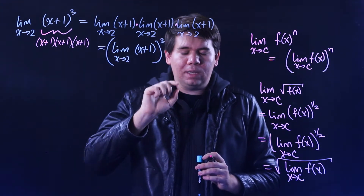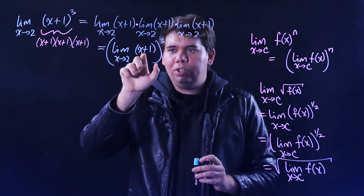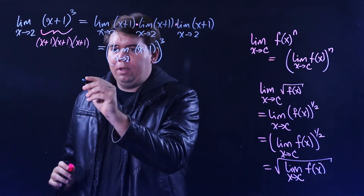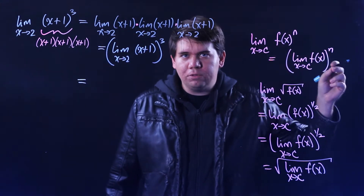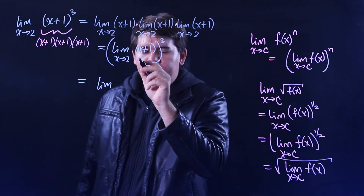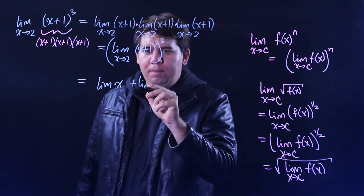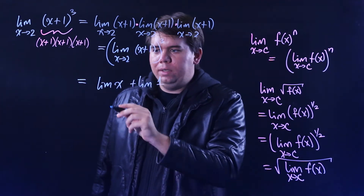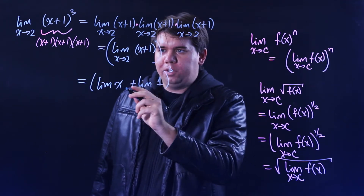How do we calculate the limit of (x+1)? Well, that's the addition of two functions. Using our addition limit law — the limit of f plus g is the limit of f plus the limit of g — we can rewrite this as the limit of the first function, x, plus the limit of the second function, which is just 1, all raised to the third power.